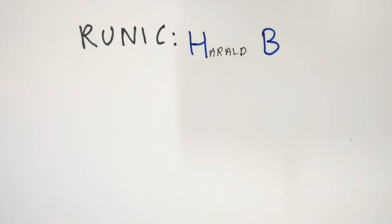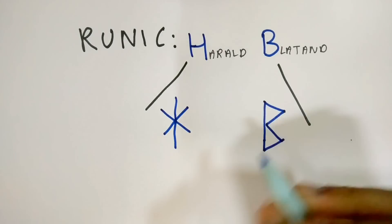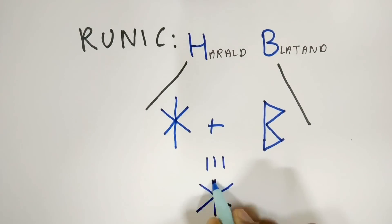Even the symbol of Bluetooth has the initials of Harald Blatend in it. This is their unique H and the B is inscribed inside the H.